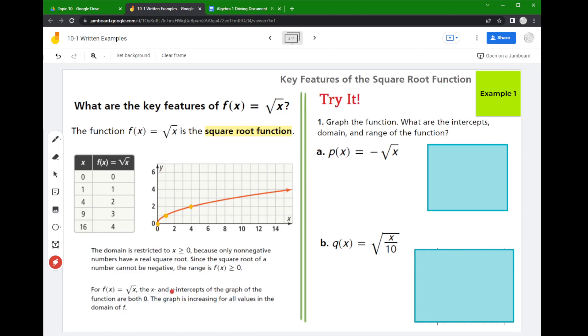Now notice the x and y intercepts of the graph are both at 0, and that's because the square root of 0 is 0. And this graph has a positive slope over every part of it. And so we say that that positive slope causes the graph to be increasing for all values within its domain.